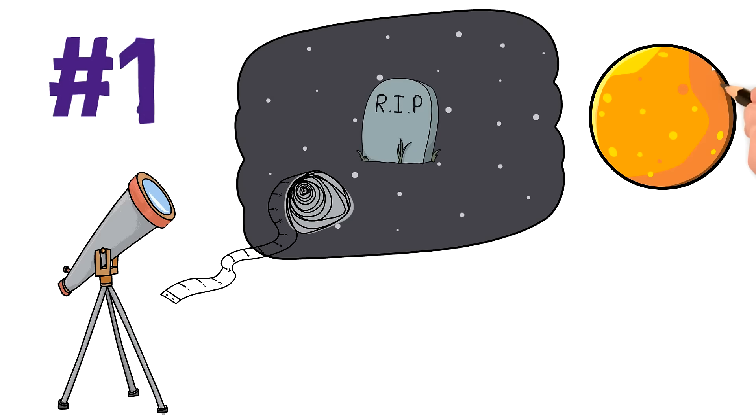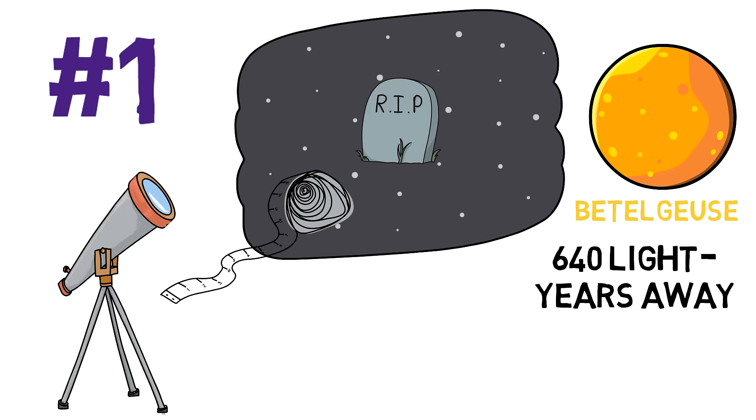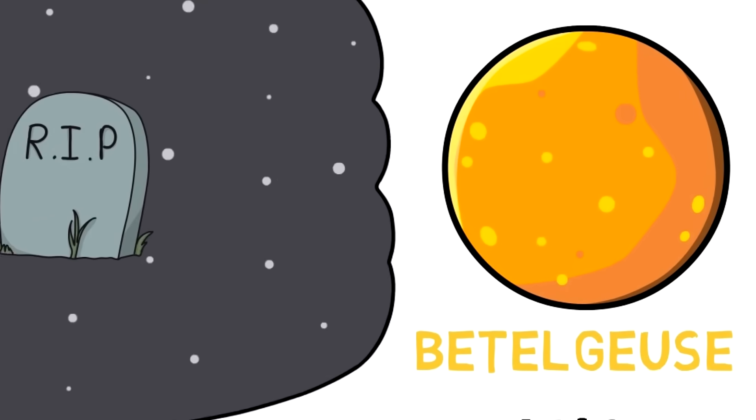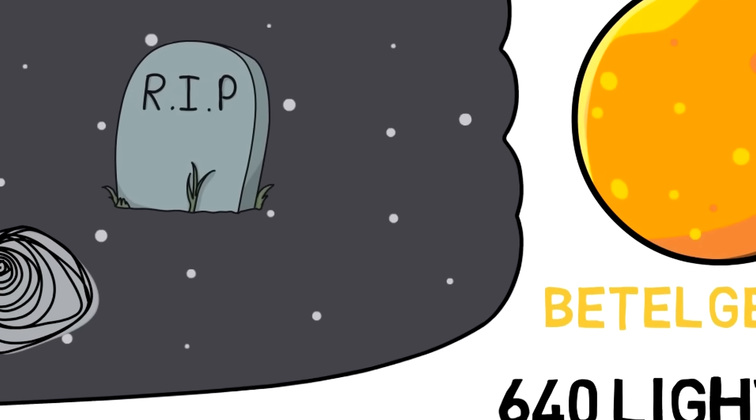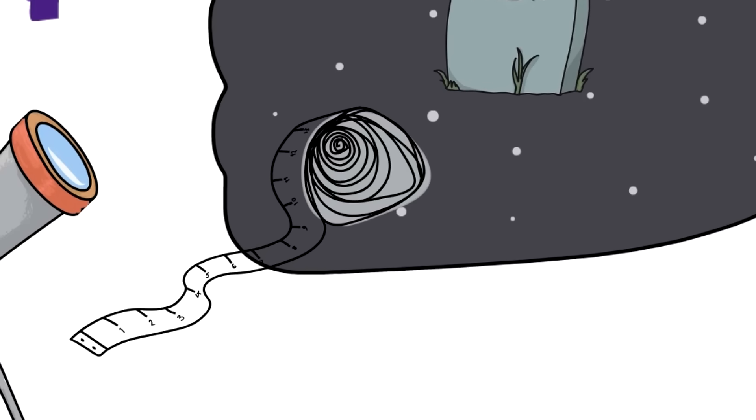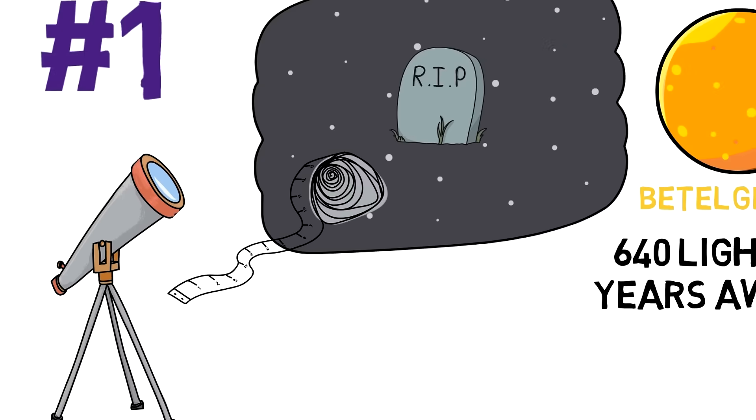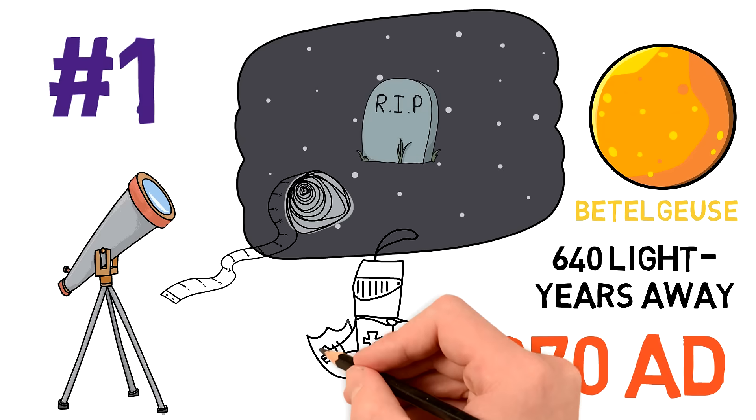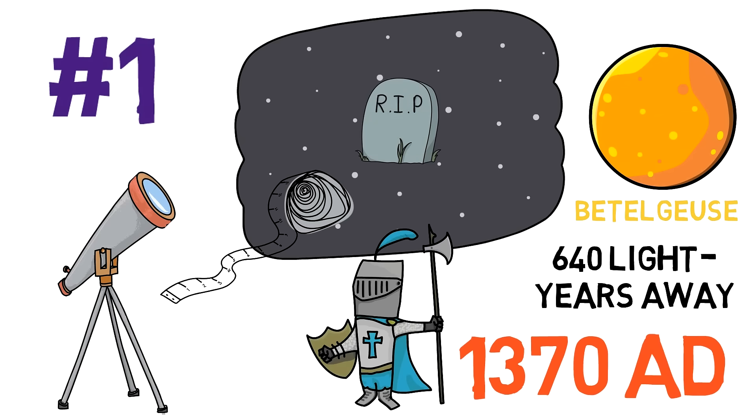For instance, the star Betelgeuse in the constellation of Orion is about 640 light years away. So, the light we're seeing from the star left it 640 years ago, traveling at light speed and arriving to us today. So, the light we're seeing for that star left it around 1370 AD during the 100 years war between France and England.